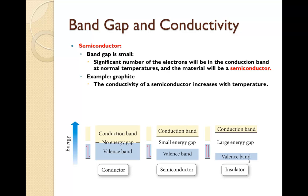Semiconductors have a small band gap. A significant number of electrons will be in the conduction band at normal temperatures, and the material will be a semiconductor. Graphite is an example of this. The conductivity of semiconductors increases with temperature. So as temperature increases, so will the conductivity.